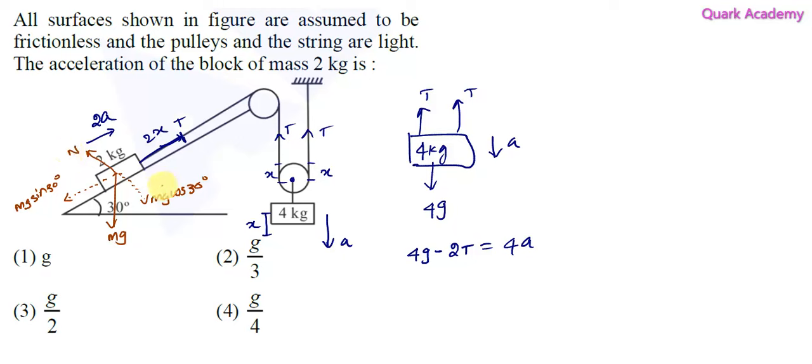The normal force and this mg cos 30 will get cancelled, and we're left with the horizontal forces. So we'll do it as a free body diagram. The 2 kg is in a slanted way; I'm just considering it in the horizontal direction.